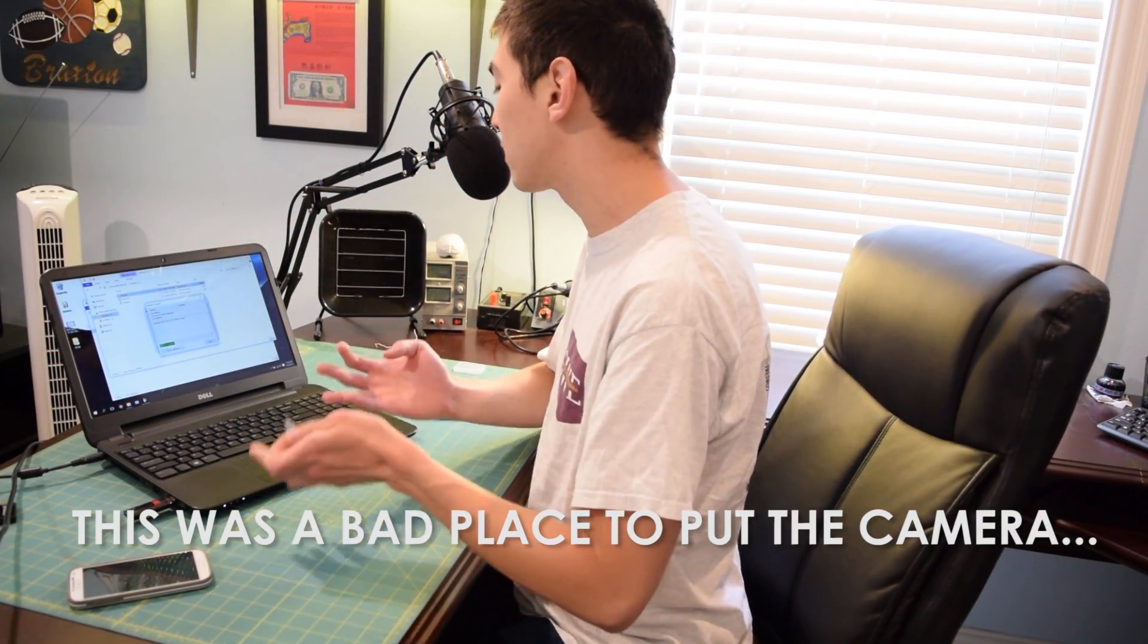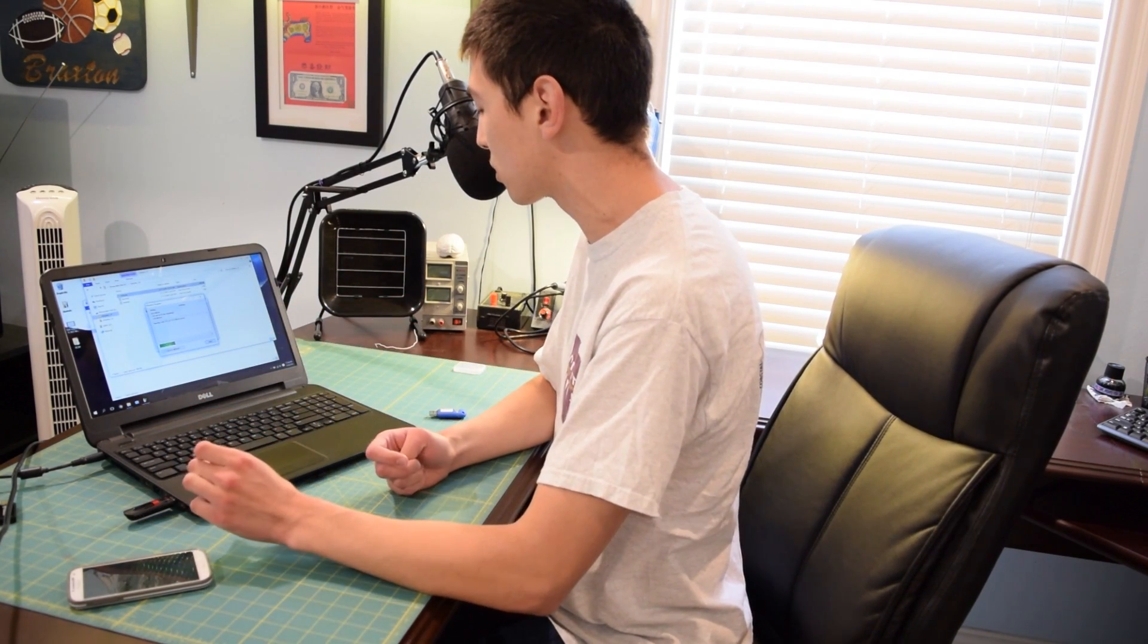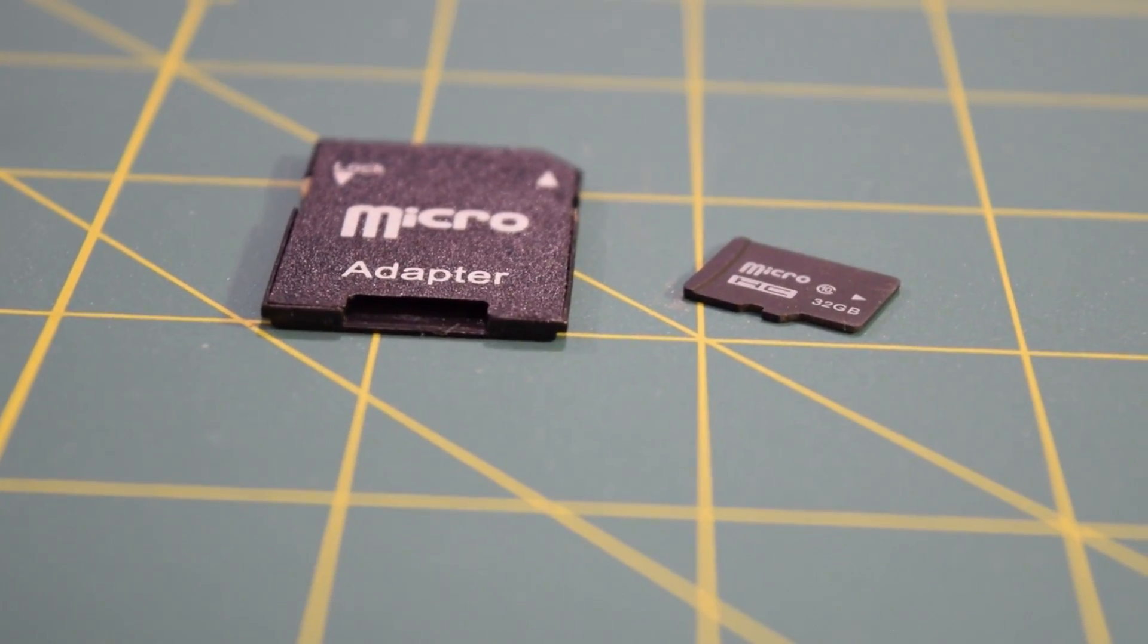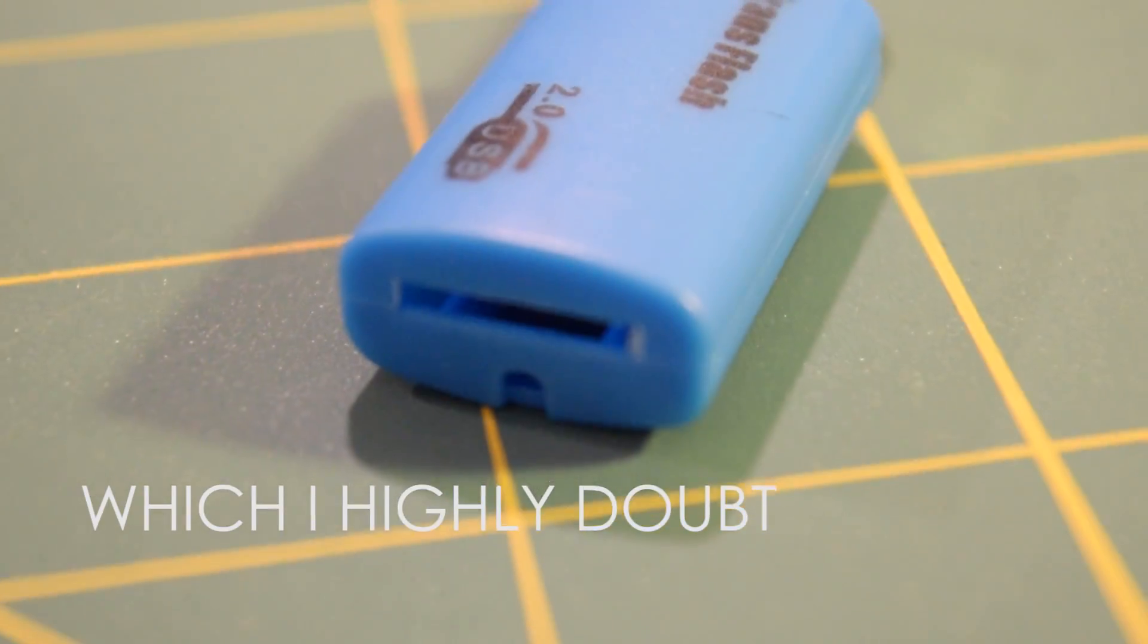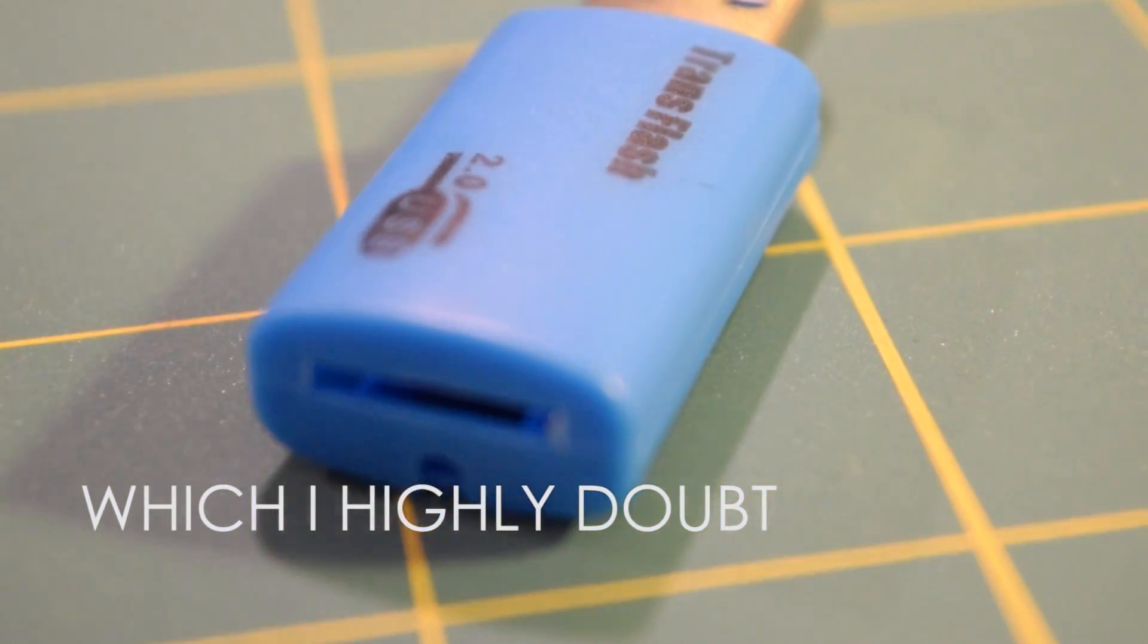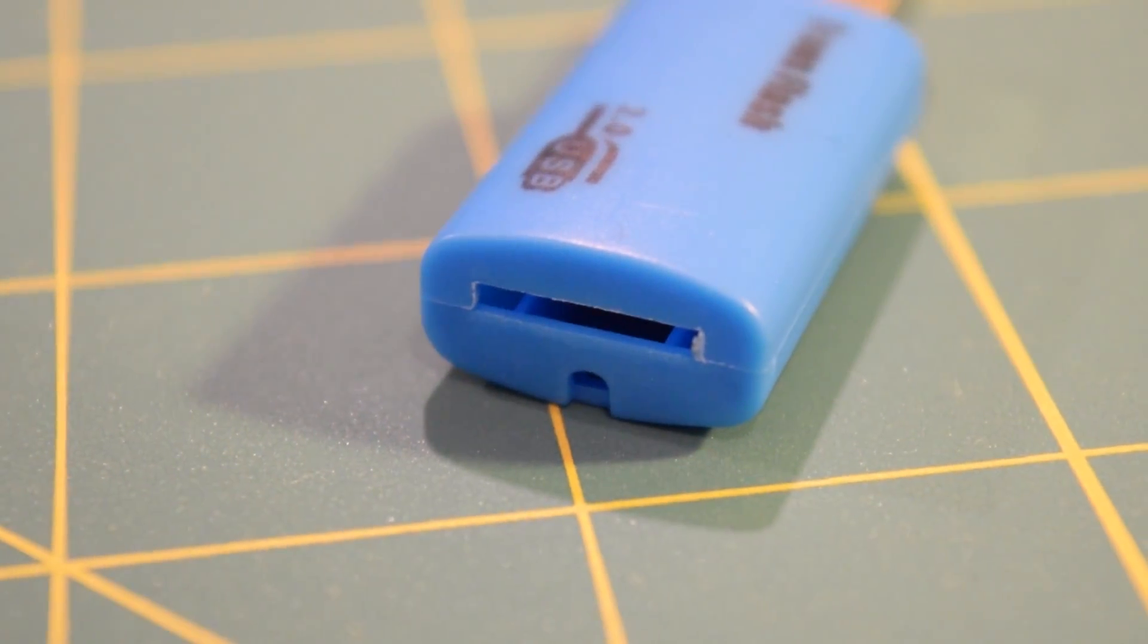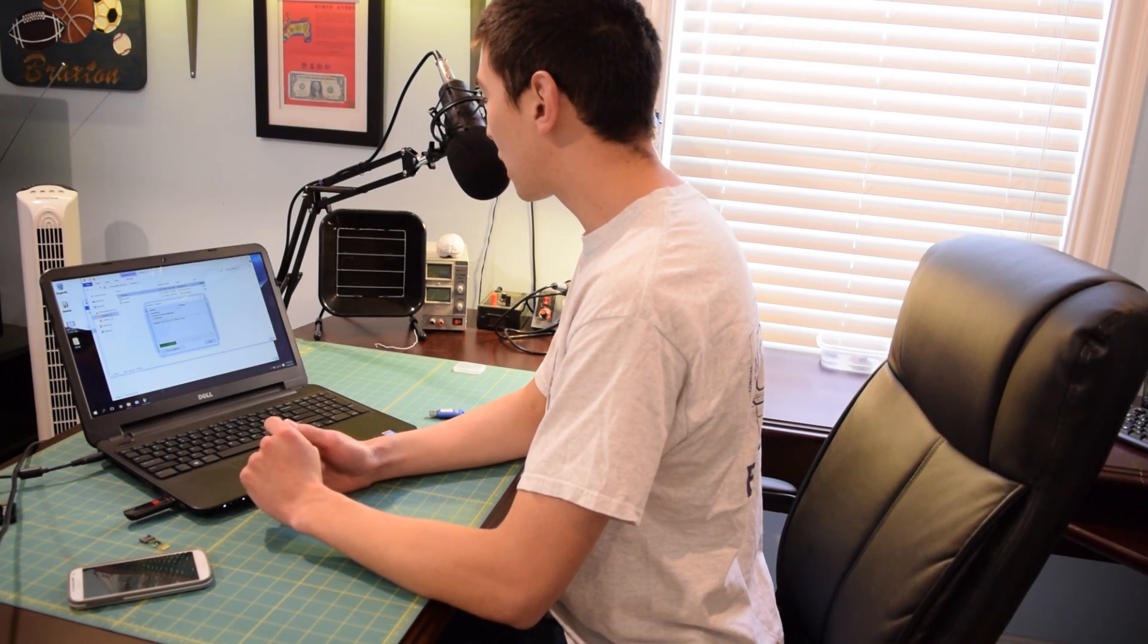But unfortunately, I cannot recommend buying this micro SD card. I don't know if I'm going to put the seller up in the description or not. I think I should contact them first. I'm pretty sure they're selling fakes, but it is possible. There's a slight chance that it is possible that I received a dud. So I might try to contact the seller first. I don't want to screw the seller over if they are selling legitimate products. I want to try to work something out. But if I can't get anything out, I think I might just post them up there so you guys can check it out.